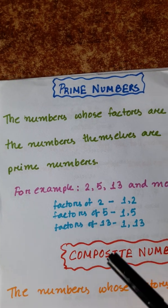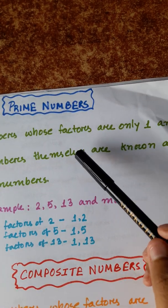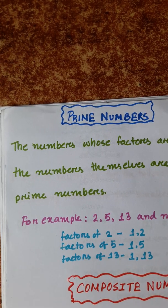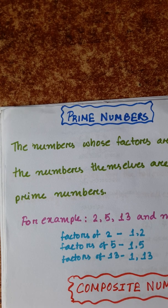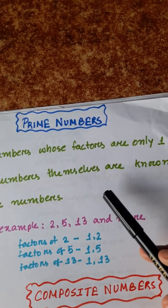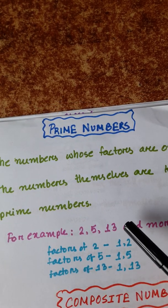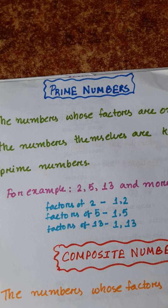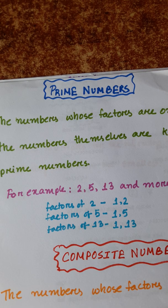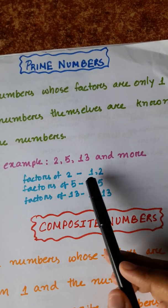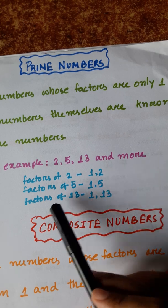Prime numbers — the numbers whose factors are only 1 and the number itself are known as prime numbers. These numbers are not divisible by any other number without a remainder. For example: 2, 5, and 13. The factors of 2 are 1 and 2; the factors of 5 are 1 and 5; the factors of 13 are 1 and 13.